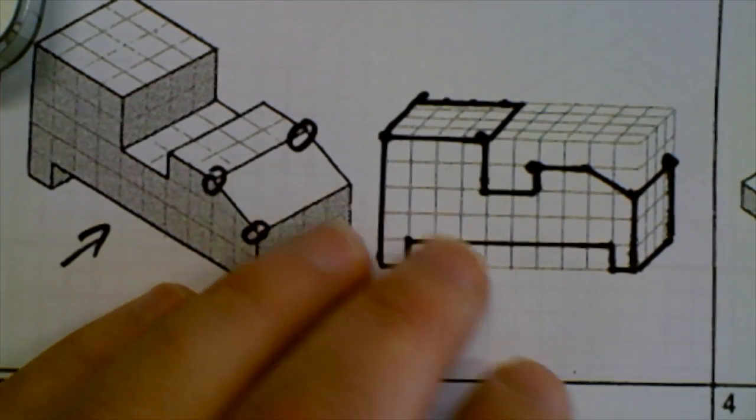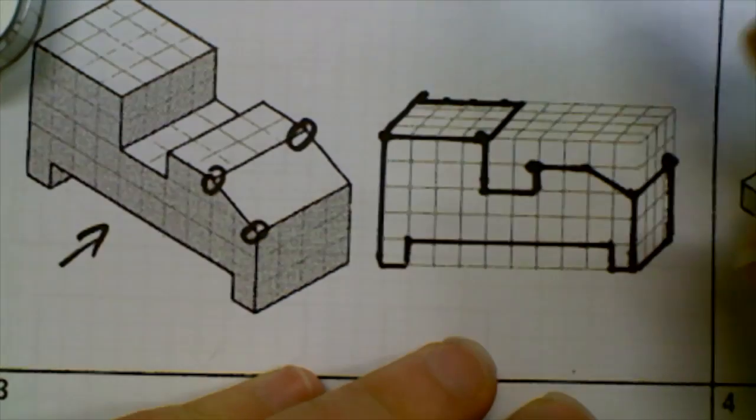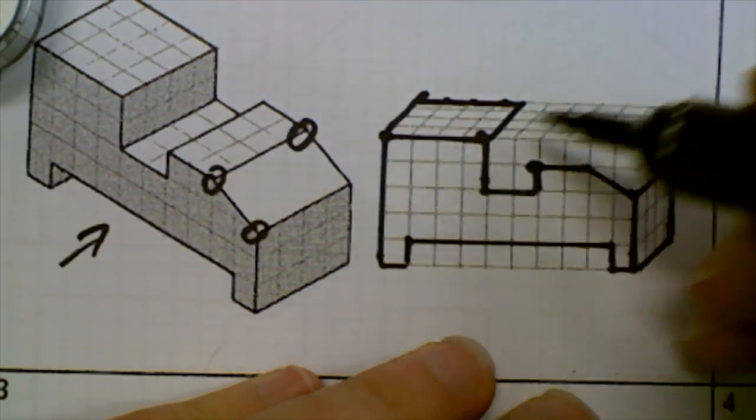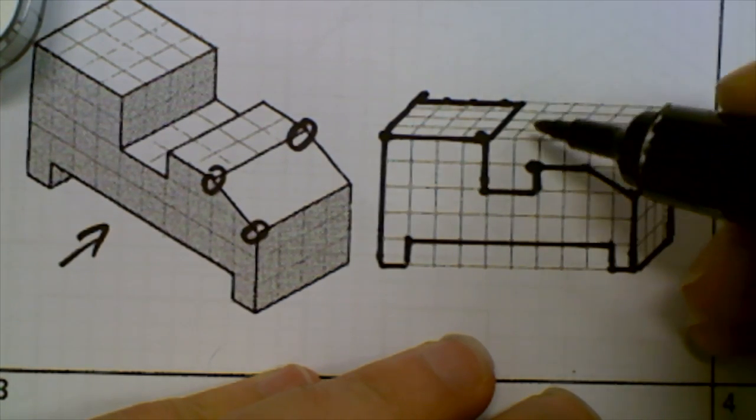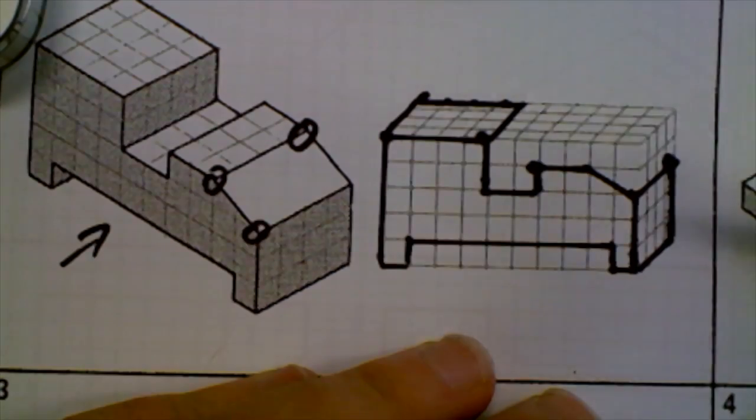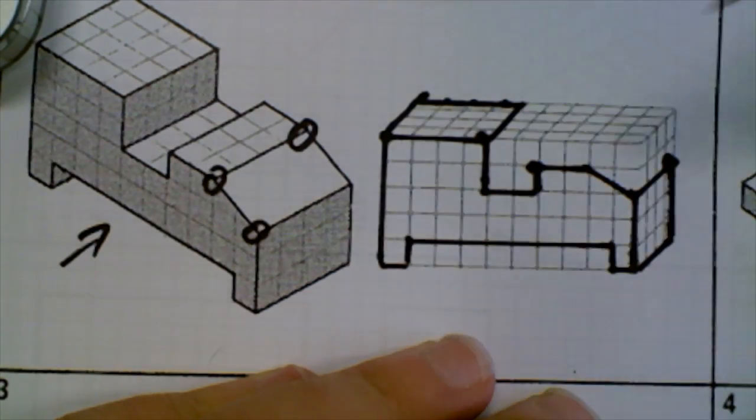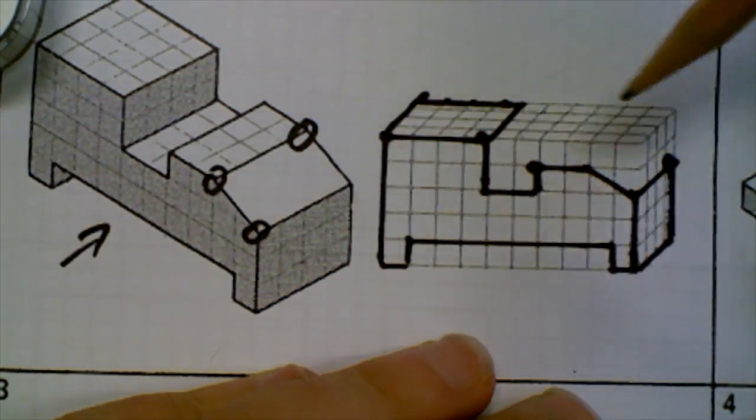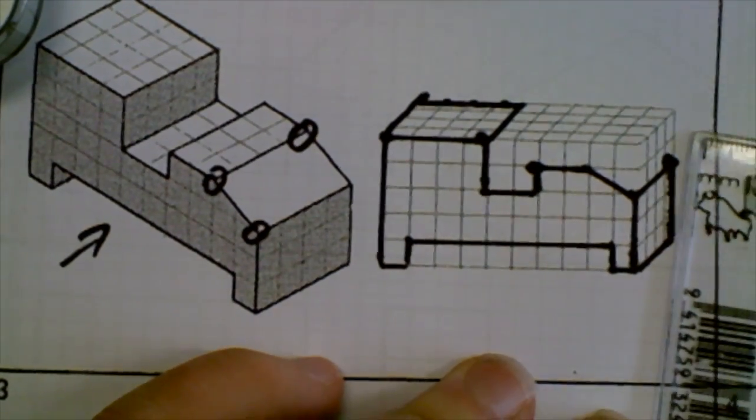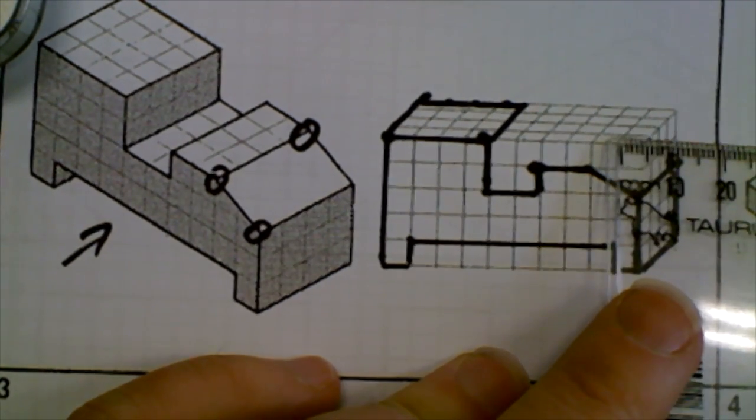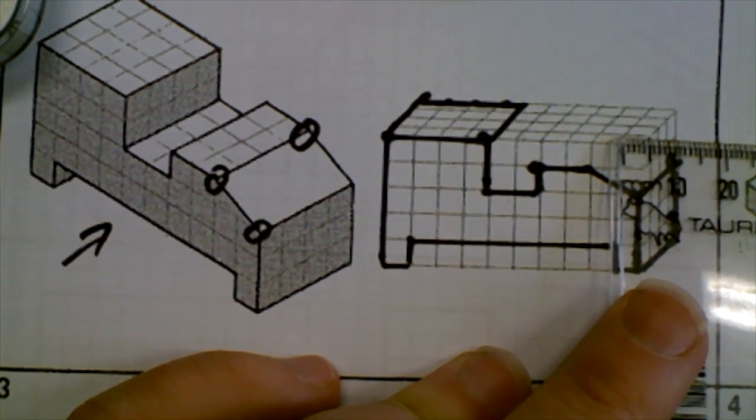Now this is the tricky part, because up to this point all we've been doing is drawing along the blocks. Now I have to draw along a line that doesn't have any blocks on it. I need to draw inside the rectangular prism there. For this I actually do need to measure. Each of these blocks is five millimeters long.